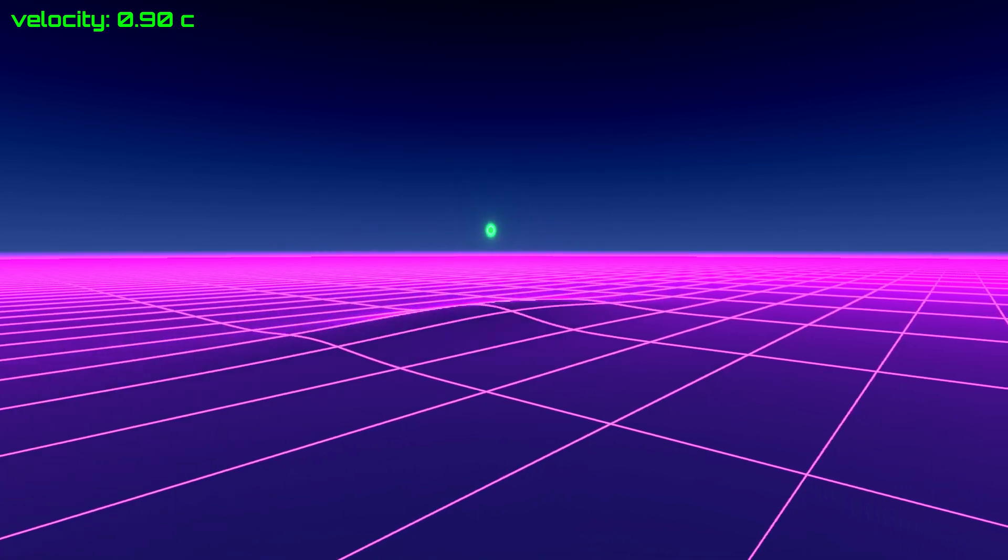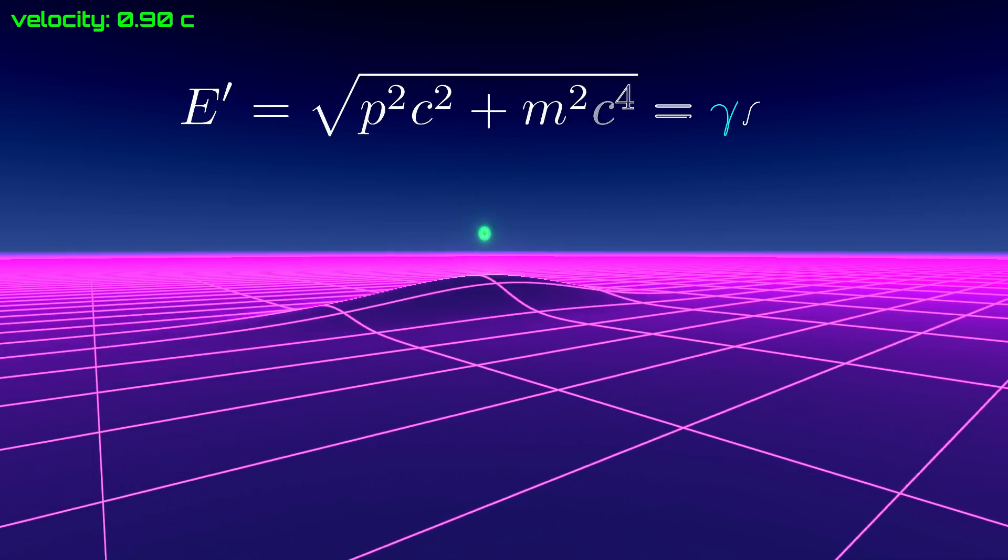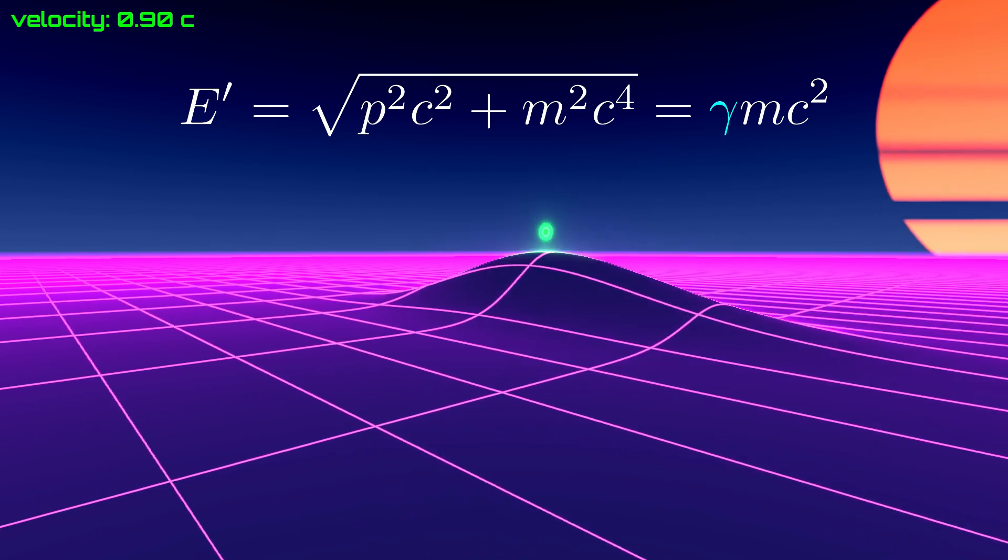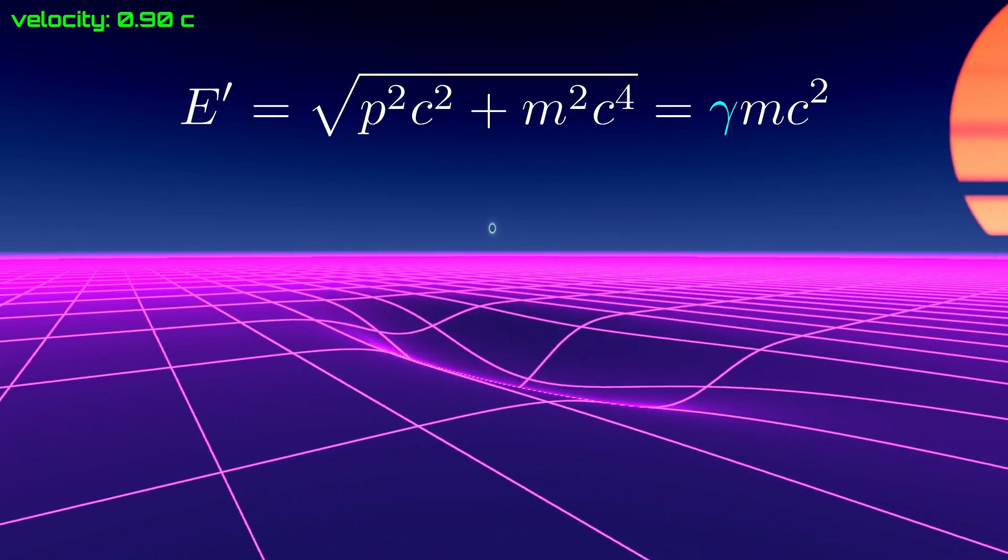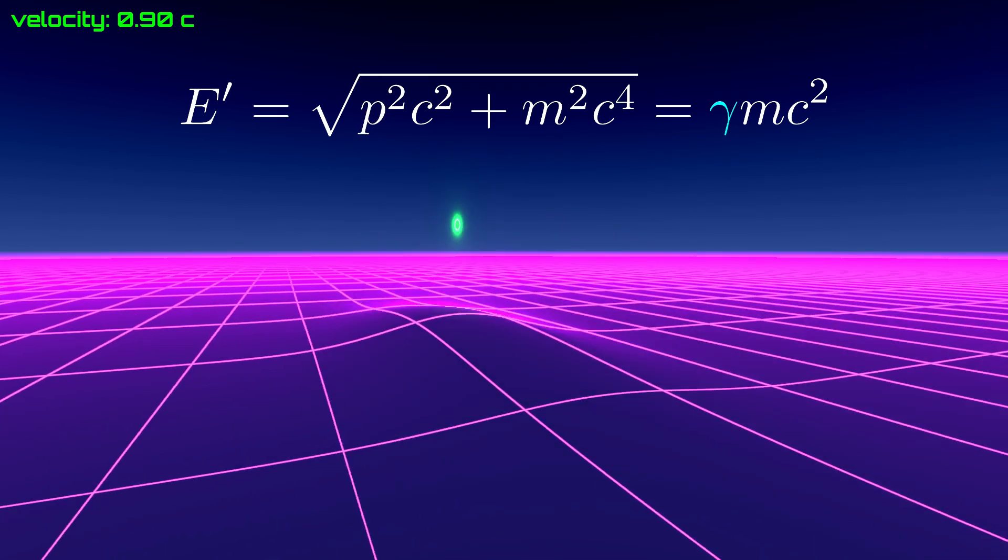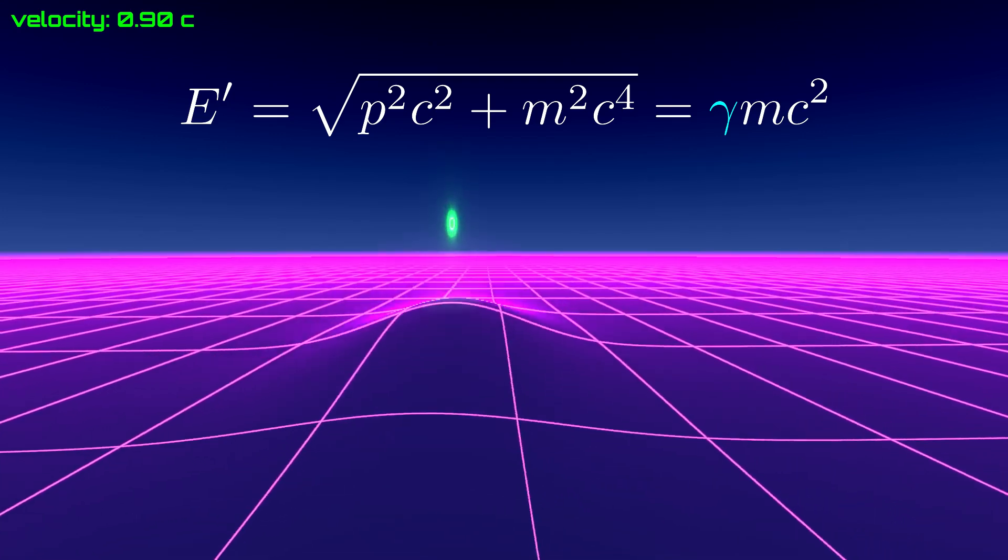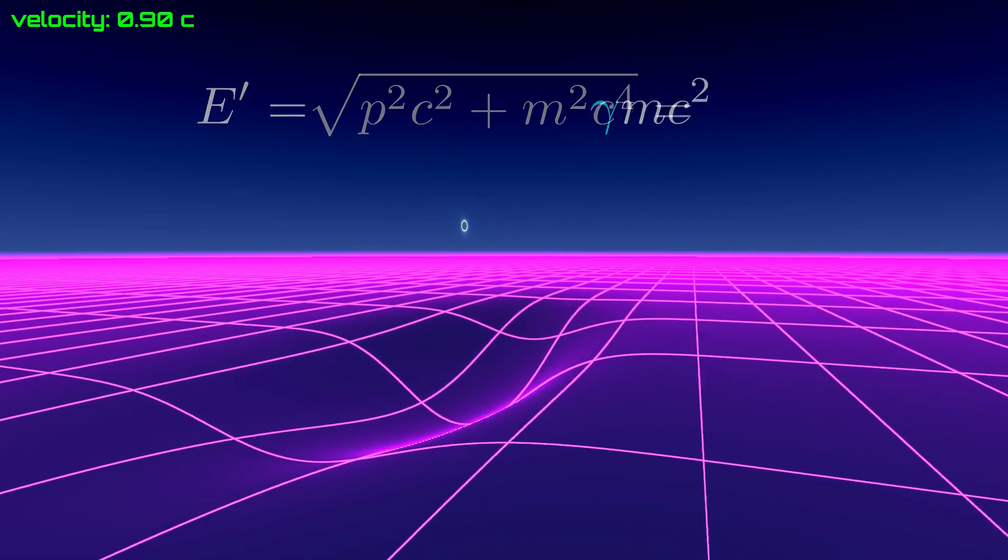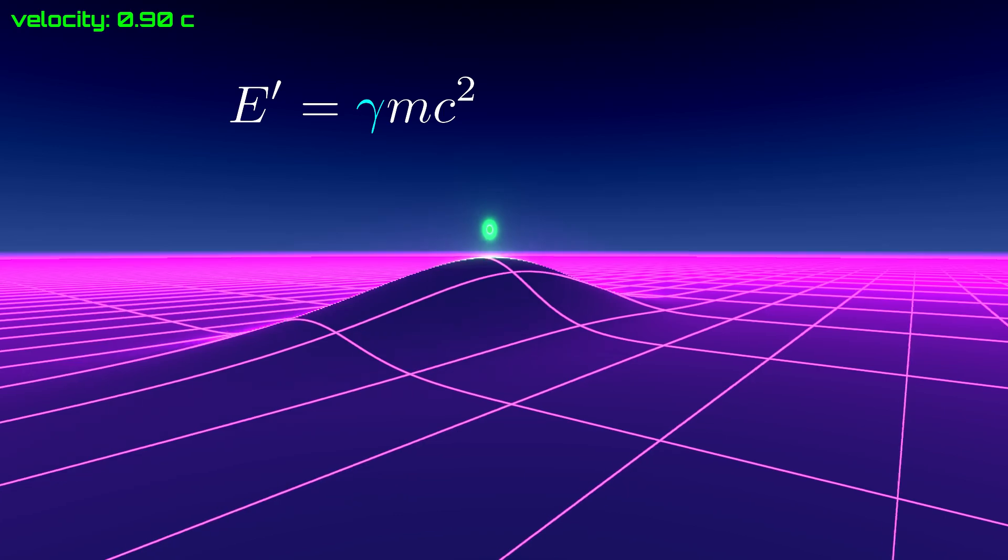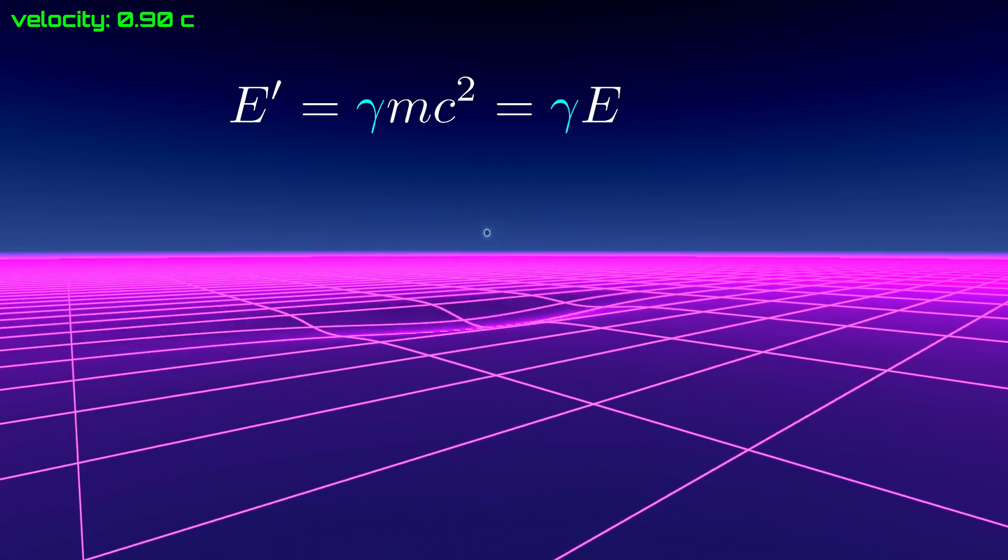But here's the problem. For if the particle is moving, it additionally has kinetic energy. So it has more energy than a stationary particle. The exact relativistic increase of energy is by a factor of gamma, as shown on the screen.